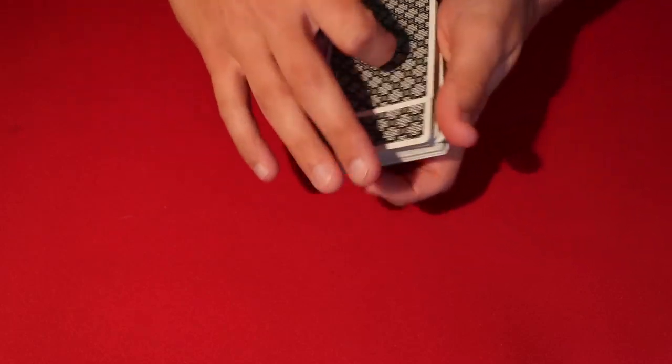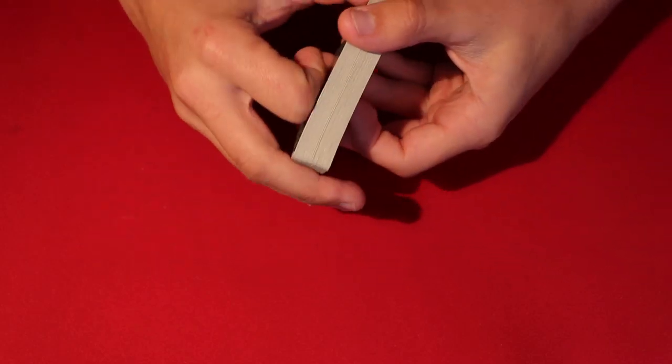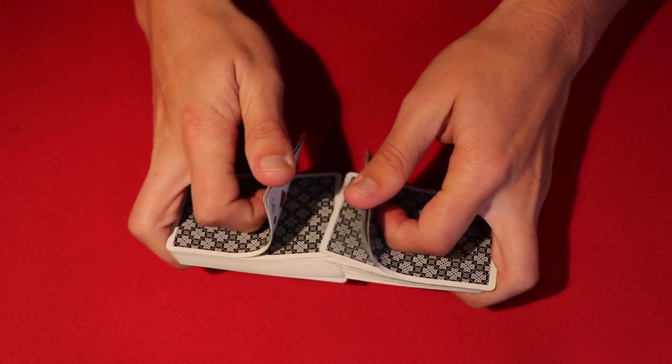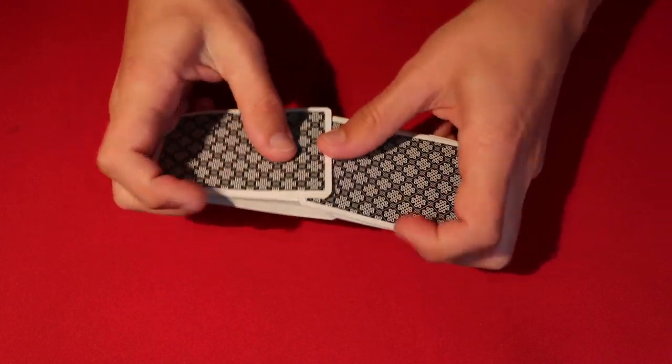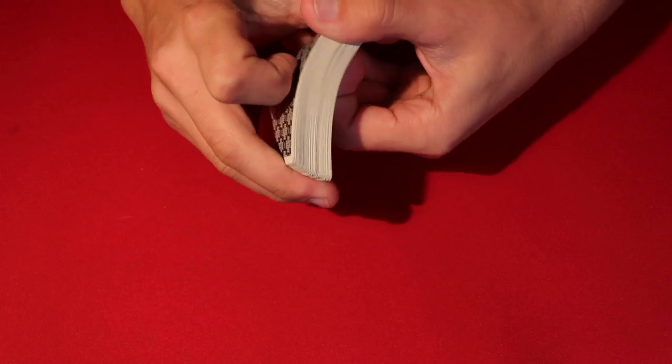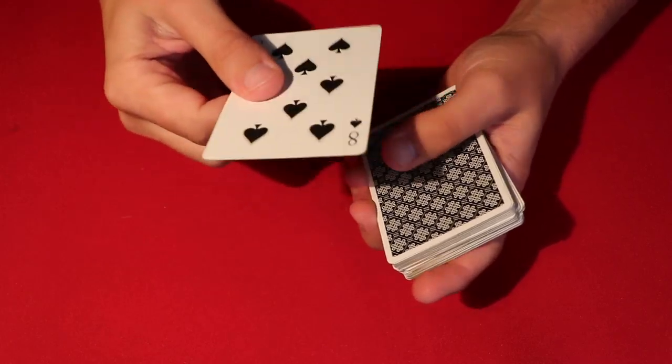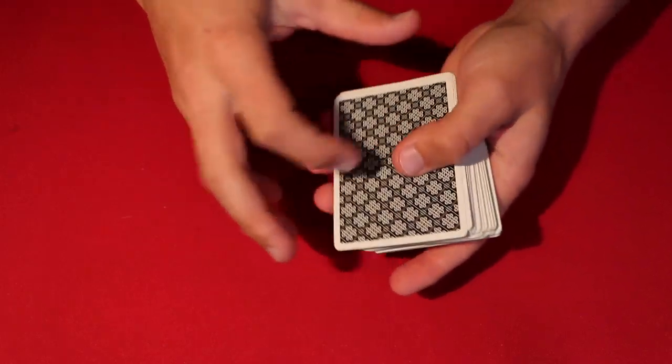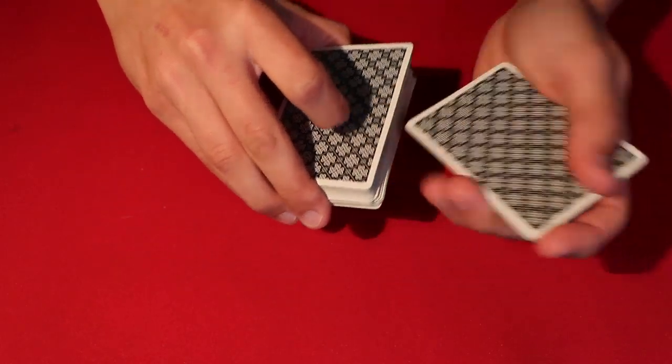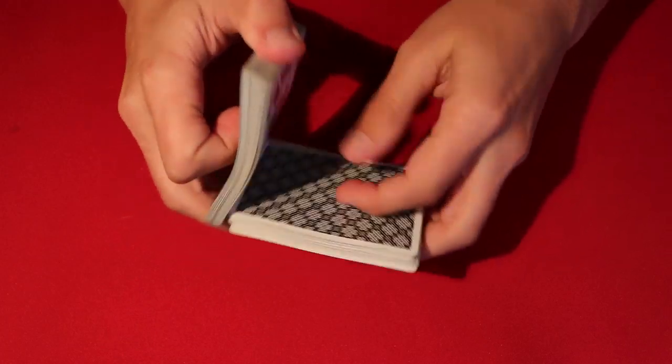Once you've controlled this card to the top, the next part is you can just do a couple riffle shuffles if you want, leaving their card obviously on top, so that way the card in your right hand is going to be the last card that you dribble. So that looks really good to the spectator if you put the card in the middle, bring it to the top, and then start shuffling the deck like this.